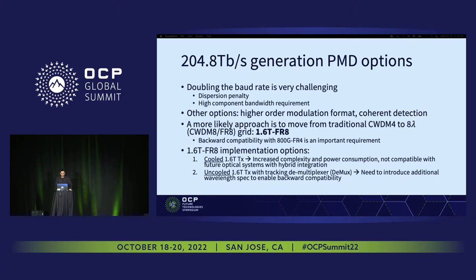Doubling the baud rate is very challenging in this generation due to the fact that the dispersion penalty is much higher and we need much higher bandwidth optical components. The other options we have are using higher modulation formats and coherent detection, or a combination of these, but they have their own challenges in terms of cost and power efficiency. We believe a more likely approach would be moving from the CWDM4 grid to CWDM8, where we reduce the channel spacing from 20 nanometers to 10 nanometers, giving us 1.6T FR8 PMDs. One of the main considerations here is backward compatibility with the 800G FR4 generation.